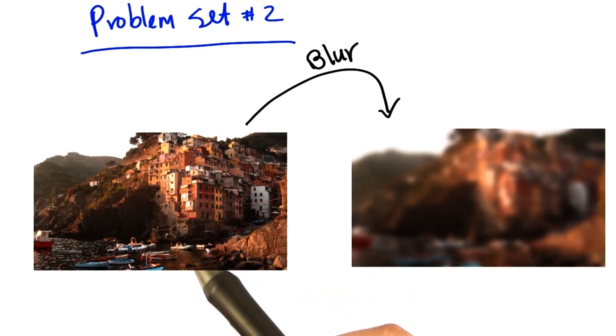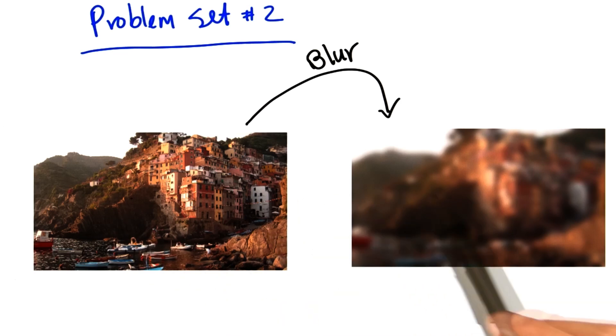In problem set number two, you will be implementing a parallel algorithm for blurring images. And here's an example of the effect we're talking about. So here's your original image, and here's the image after we apply a blur effect to that original image.